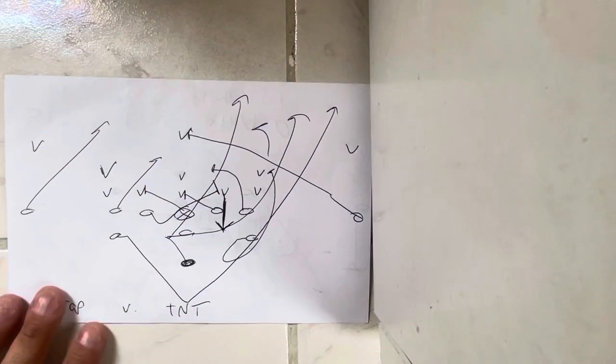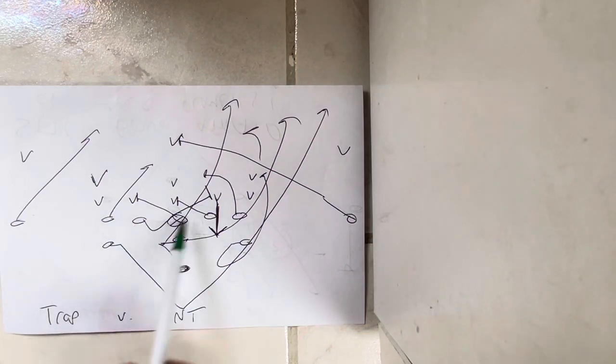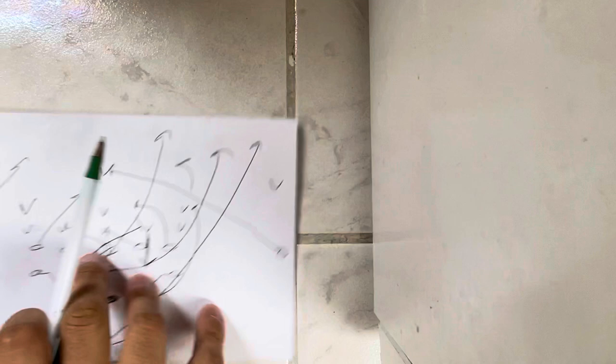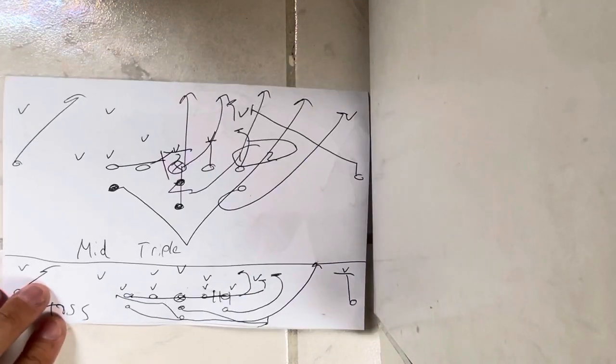Number two would be the trap. The trap is designed for when the defense is coming up the field - you take the quarterback, trap and run to the void. You could trap the three technique or you could end up running it at a B gap defender and trapping it.